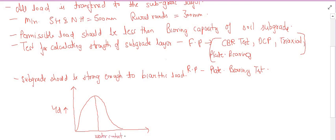When compacting the subgrade, there is a relationship between dry density and moisture content. The dry density is maximum at the optimum moisture content (OMC). When water content increases beyond OMC, dry density starts decreasing. When we compact the subgrade, we aim to attain maximum dry density, because at maximum dry density the soil can utilize its full strength and bear maximum load — which is achieved at optimum moisture content.